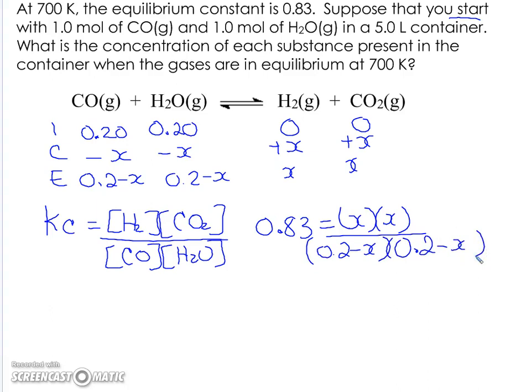Let's look at this further. We can see that can be simplified. I'll do it over here. 0.83 is equal to X squared divided by 0.2 minus X, and we'll square that too.